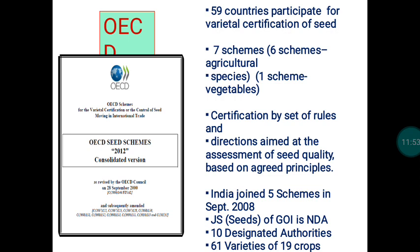India joined five OECD schemes in September 2008. The Joint Secretary of Seeds, Government of India, is the national designated authority for OECD schemes. Apart from the national level, there are 10 designated authorities for certain states responsible for monitoring OECD scheme activities in their area of operations. Under OECD schemes, 19 crops from India are enrolled, and out of those, 61 varieties are listed in the OECD scheme for seed production.